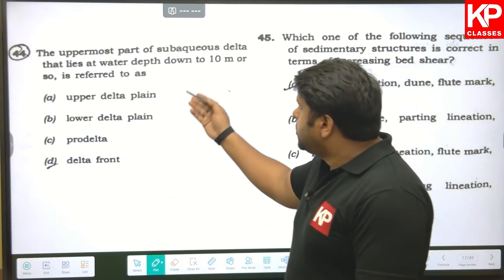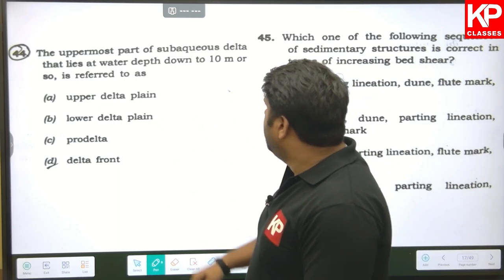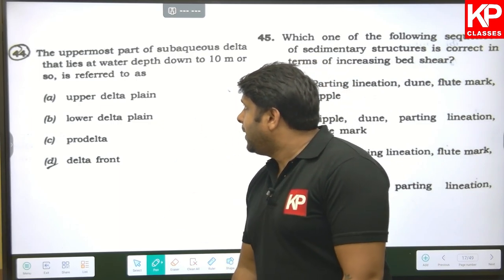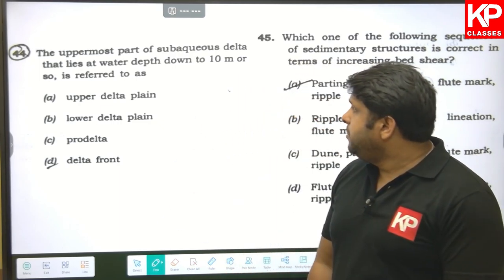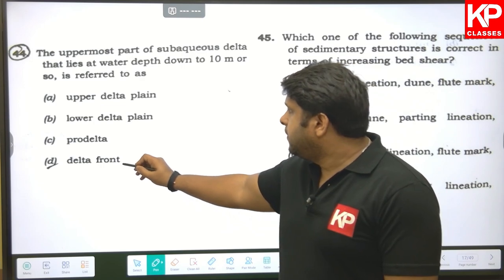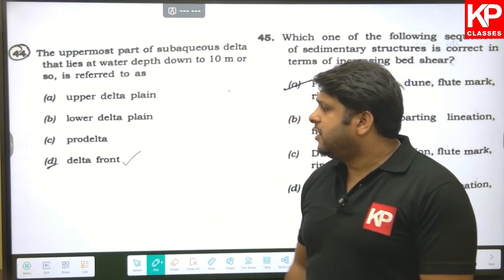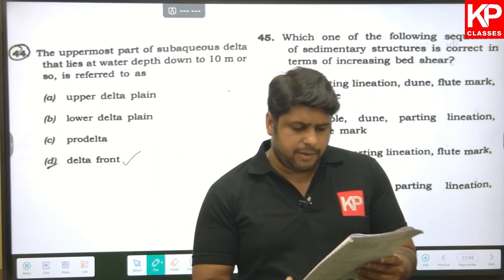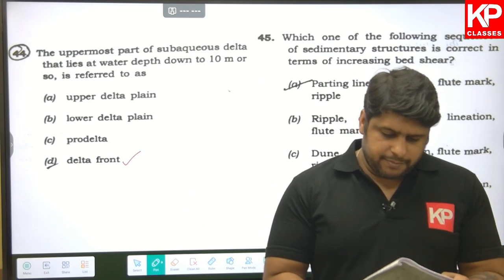Question forty-four: the uppermost part of the subaqueous delta that lies at water depths down to about 10 metres is referred to as the delta front. D is the right answer.